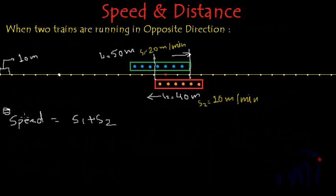The effective crossing speed is the sum of both speeds, and this happens only when they are running in opposite directions. When two trains run in opposite directions, the distance or length they cover of each other in unit time is actually the sum of their speeds. You must have learnt in school that when two trains run in opposite directions we add their speeds — this is the reason why.